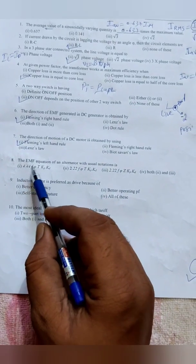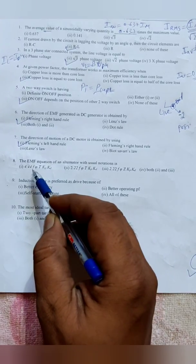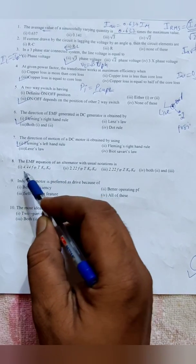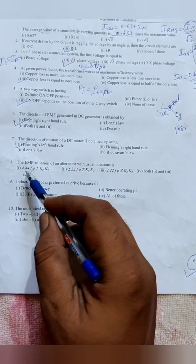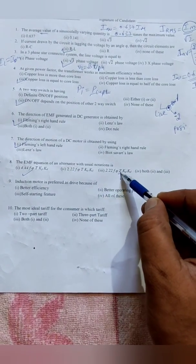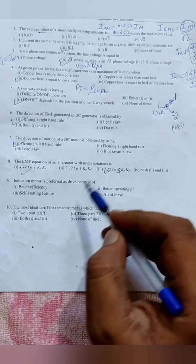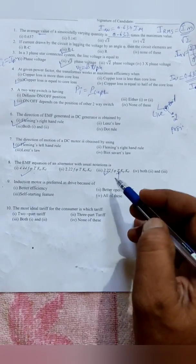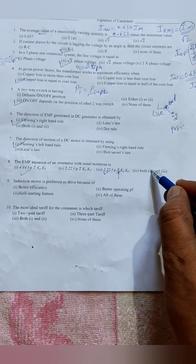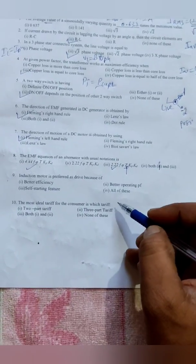Next, the EMF equation of an alternator with usual notations is 4.44 f phi Tp Kc Kd. This is correct. Whenever turn is there, 4.44 is correct. Whenever conductor is there, 2.22 is correct. So first one and third one are correct, both are correct. But in fourth option they gave second and third, that is wrong. So you make changes in the fourth option - both one and three are correct.